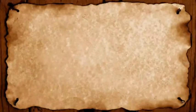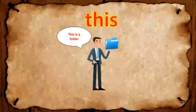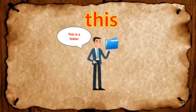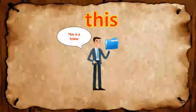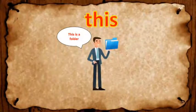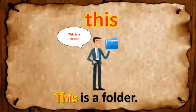The next word is 'this'. What does 'this' mean? 'This' refers to an object or something which is next to you — next to your hand. Look at the picture: the man is holding a folder in his hand. The folder is right on his hand, so he says, 'This is a folder.' The word is used in a sentence: This is a folder.